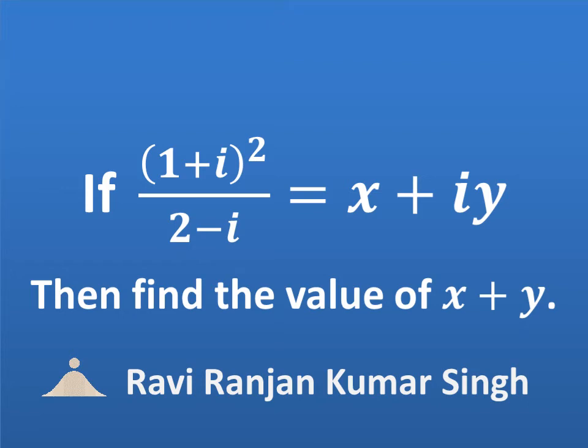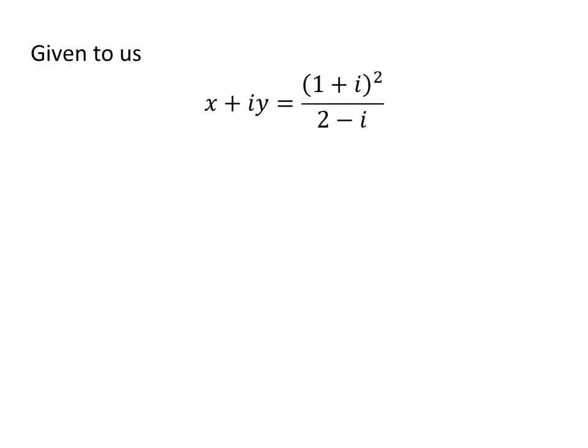In this video, we will learn to find the value of x plus y when the square of (1 plus i) upon (2 minus i) is equal to x plus i times y. Here, i is the imaginary unit. Given to us, x plus i times y is equal to the square of (1 plus i) upon (2 minus i).